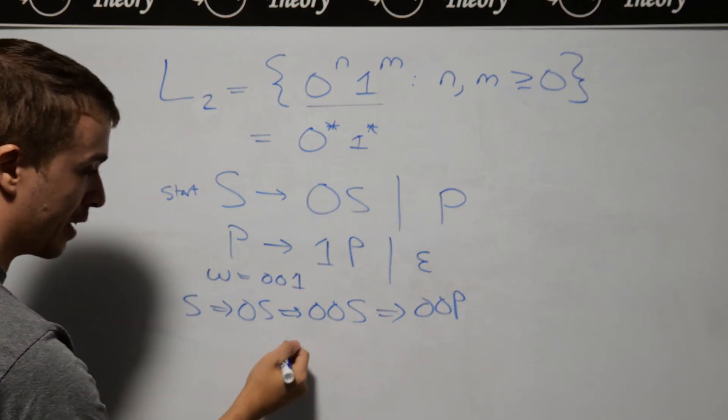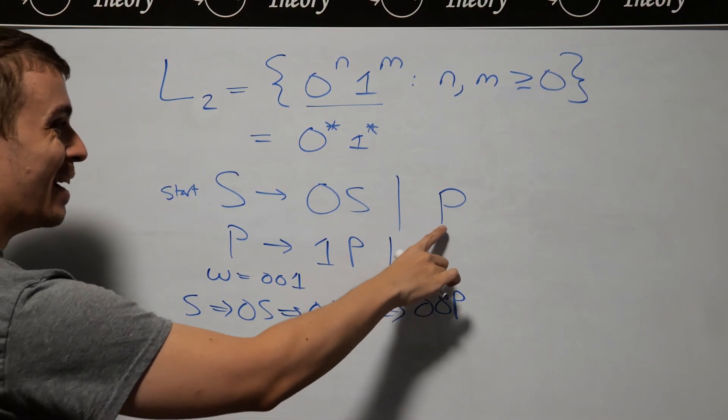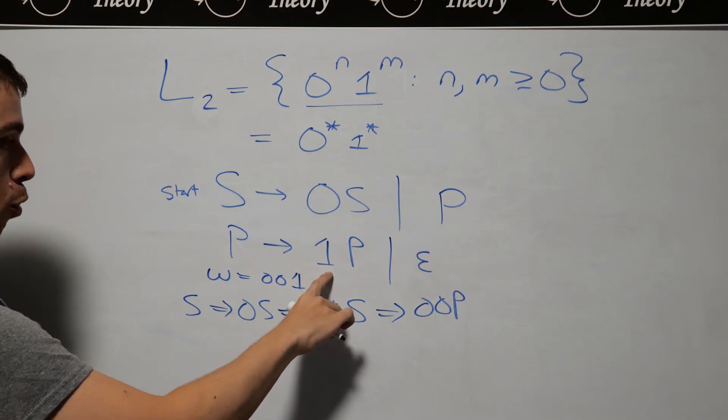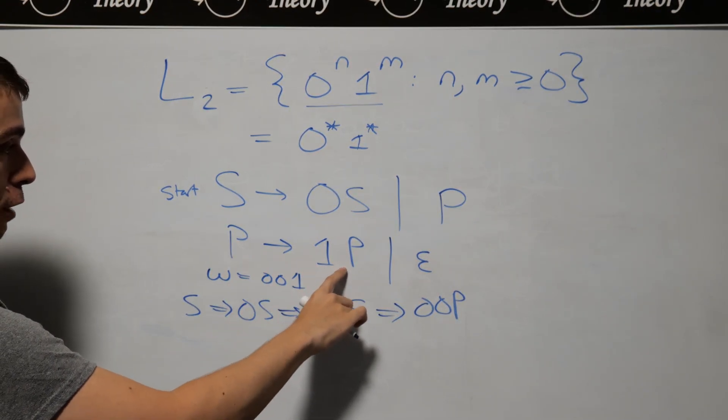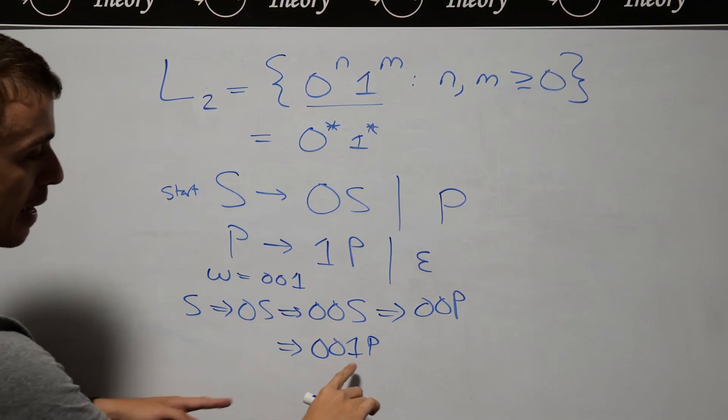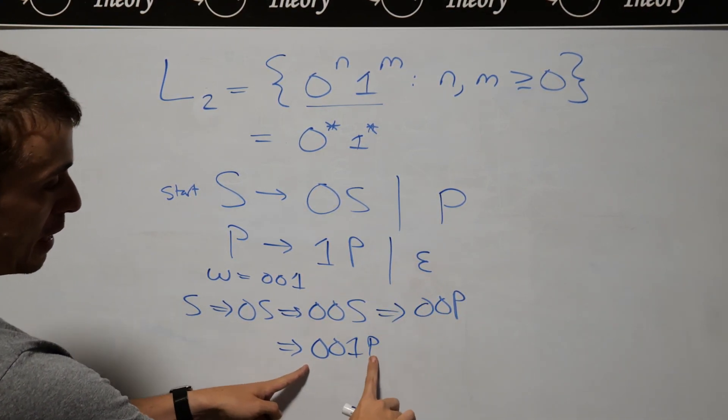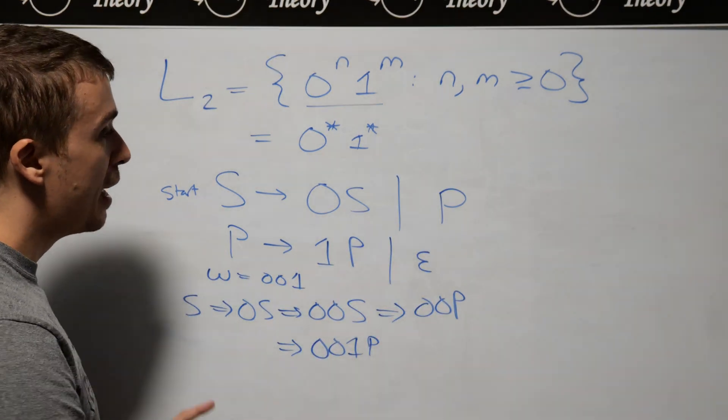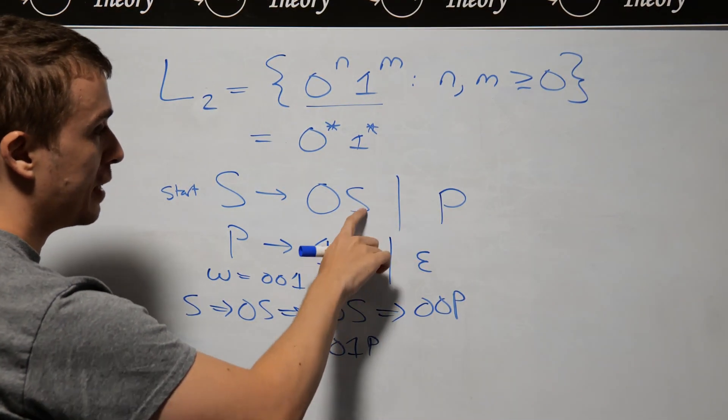Then now I need to generate a one, which is applying this rule P goes to 1P. So 001P. And then now I need this rule here because every rule in the grammar otherwise always has a variable attached to it.